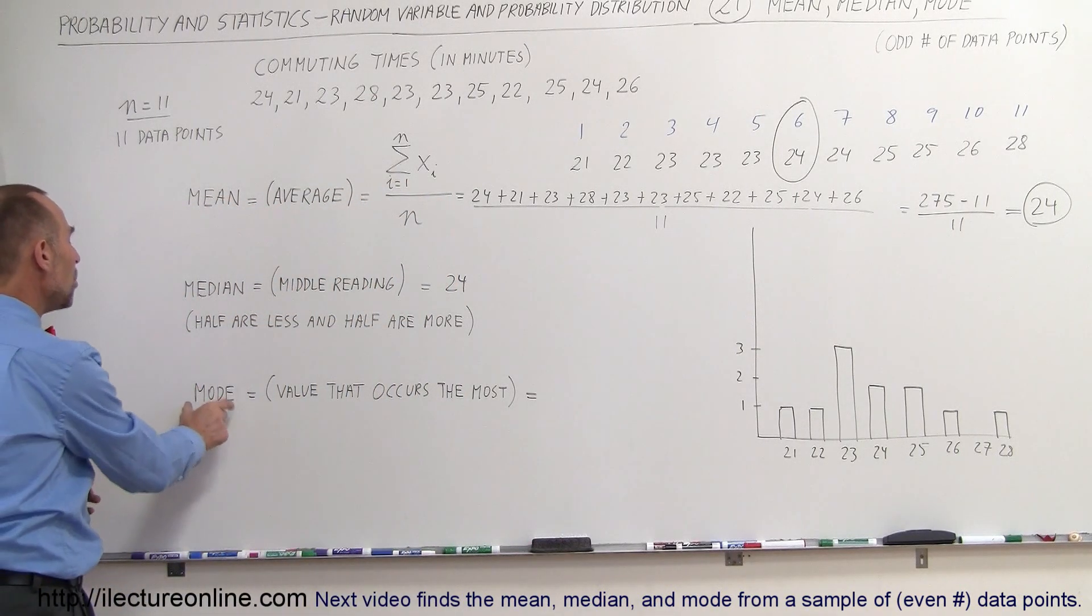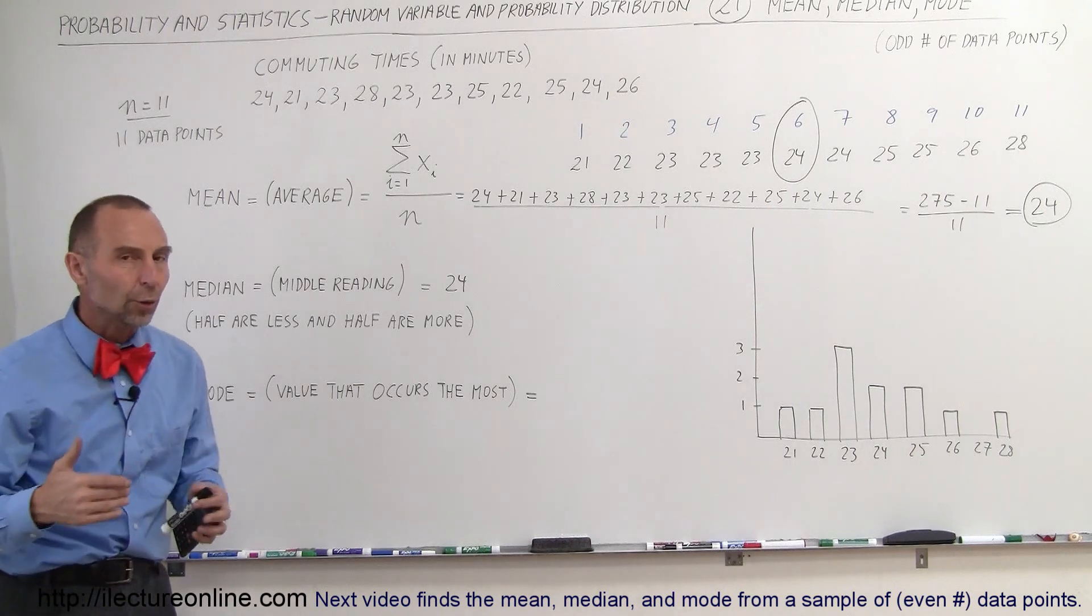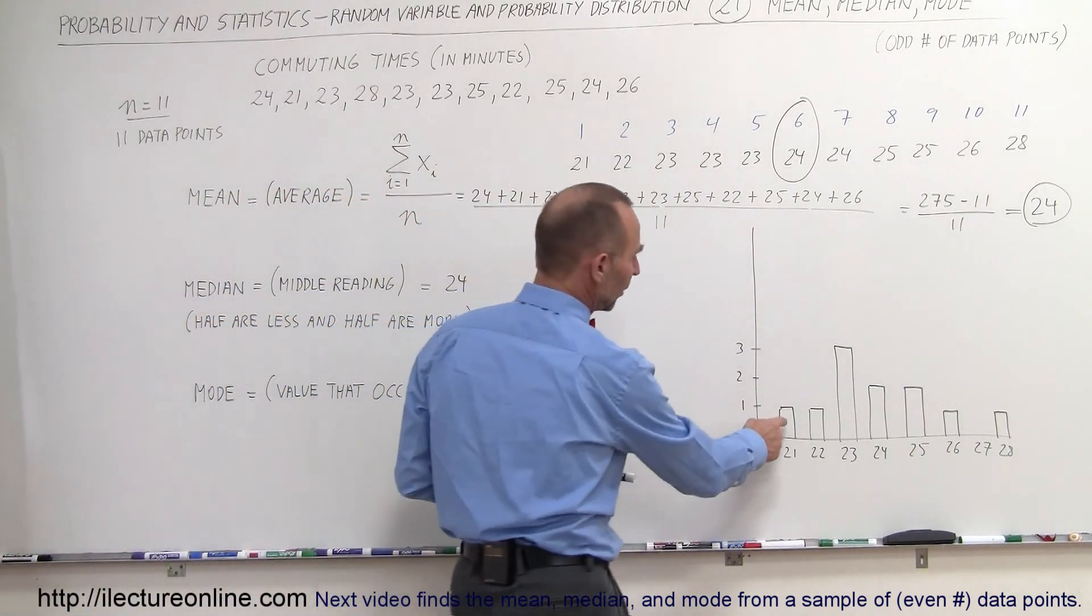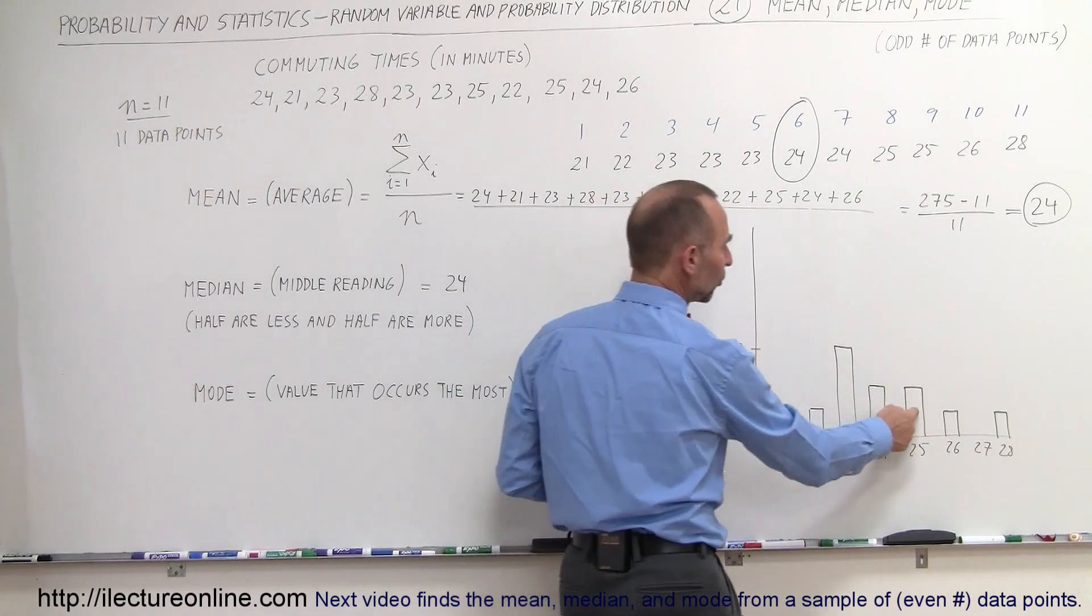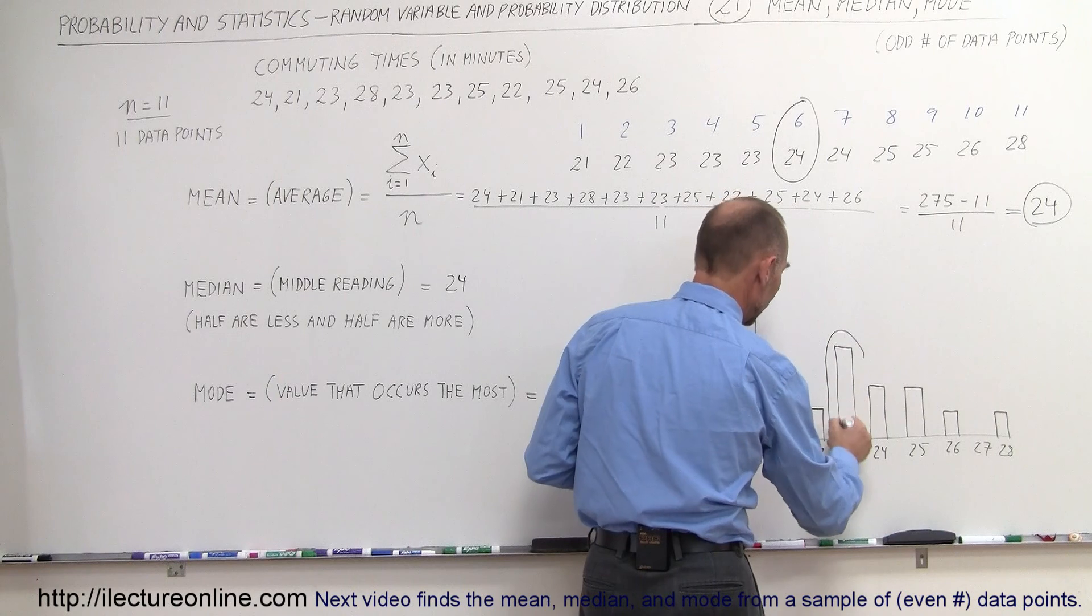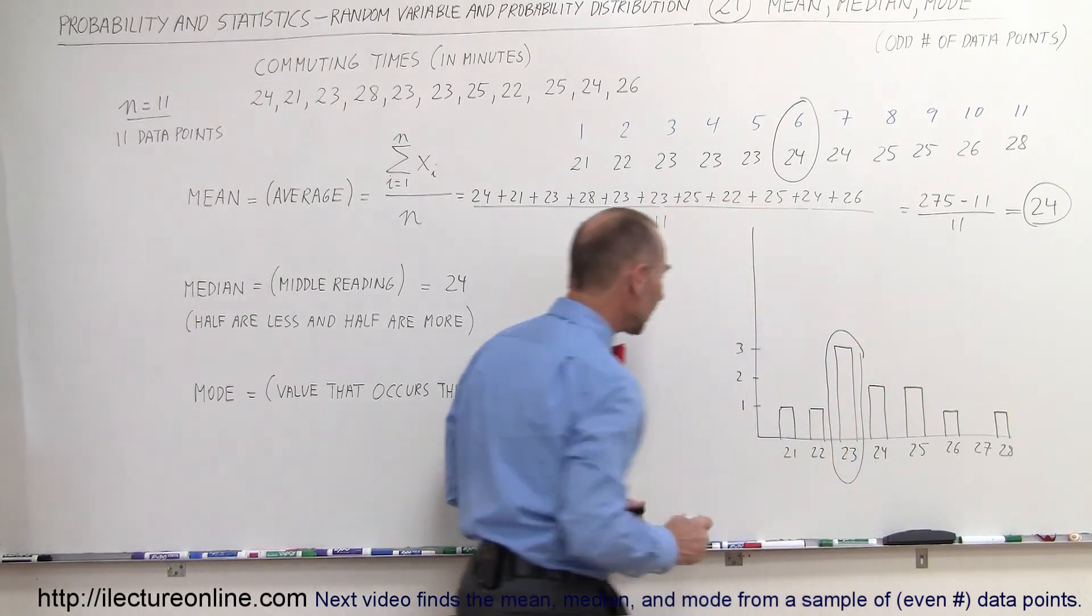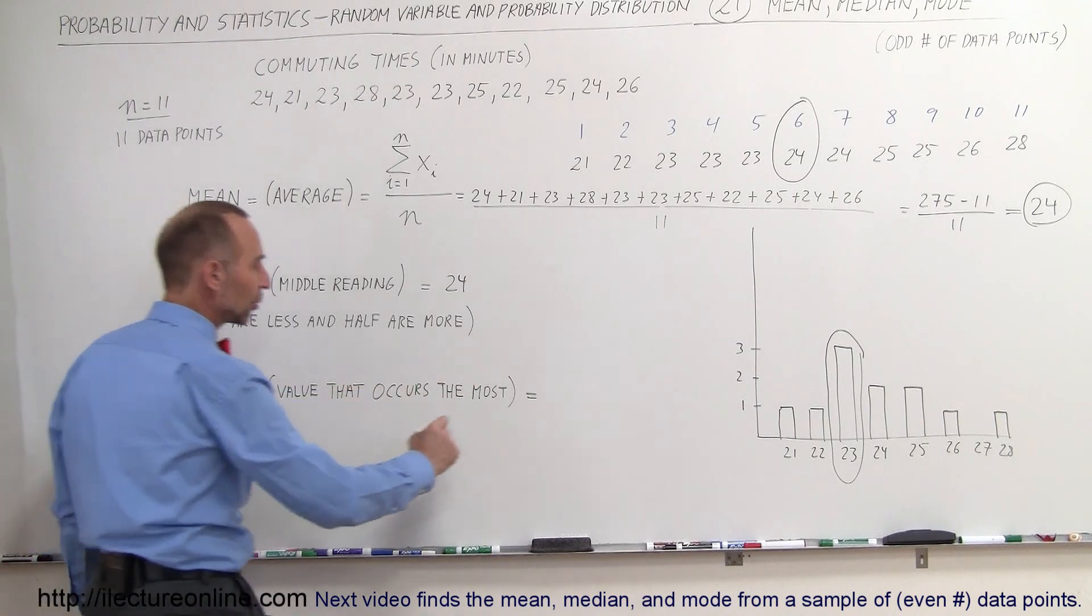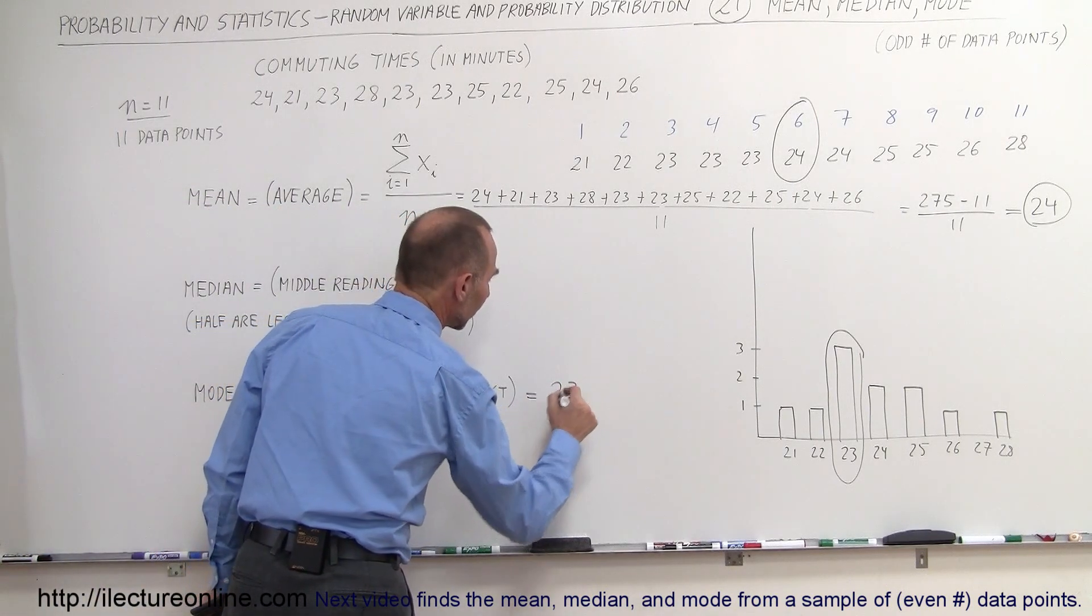Alright, now the final thing is the mode. The mode is the value or the reading that appears the most. So notice, this appears once, once, three times, twice, twice, once, and once. The one that appears the most is the reading of 23. So that becomes the mode. The mode is the value that we see there that occurs the most. So in this case, that's 23.